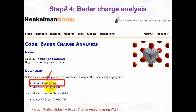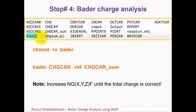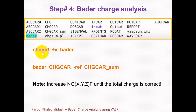To run the Bader charge analysis program, we first need to obtain the binary of the Bader analysis program. To get this program, go to the Henkelman group web page again, and in the download section you can download the program for the Linux platform. After downloading the Bader charge analysis program, place the Bader program in our corresponding folder, which includes all the files including CHGCAR_sum and AECCAR0, AECCAR1, and AECCAR2. To make the Bader program executable, run the command: chmod +x bader.